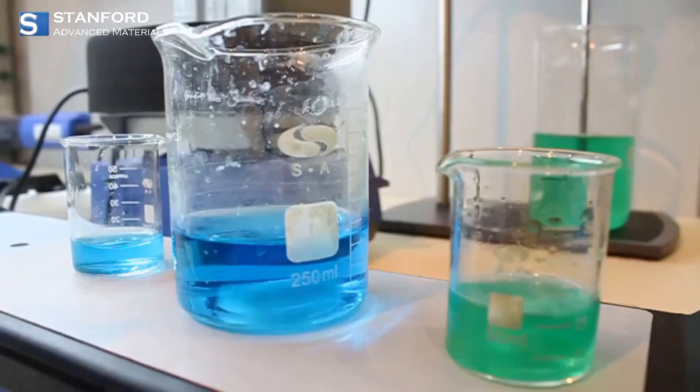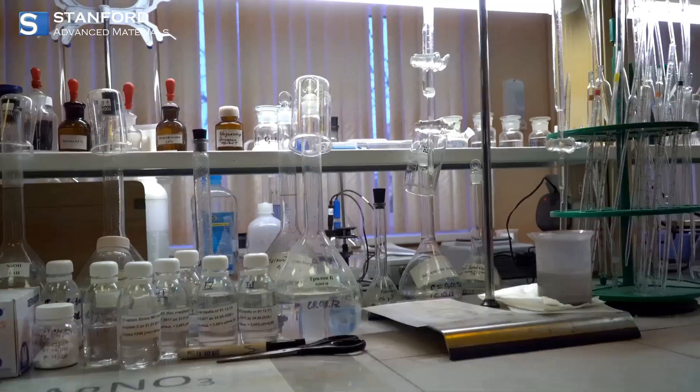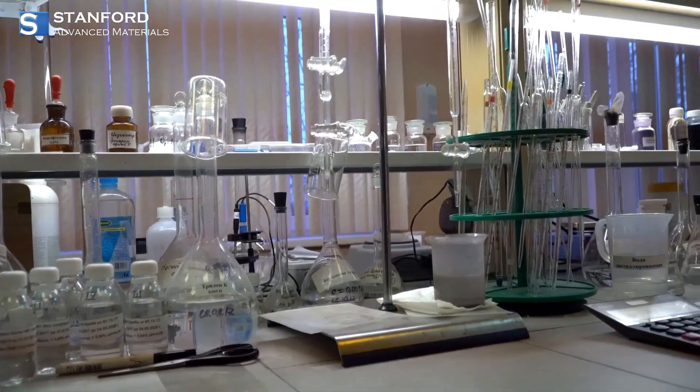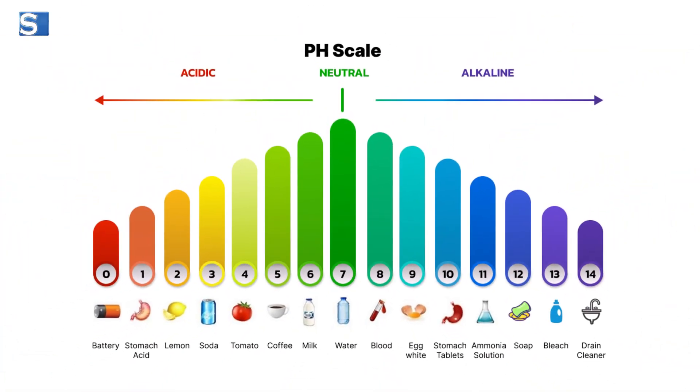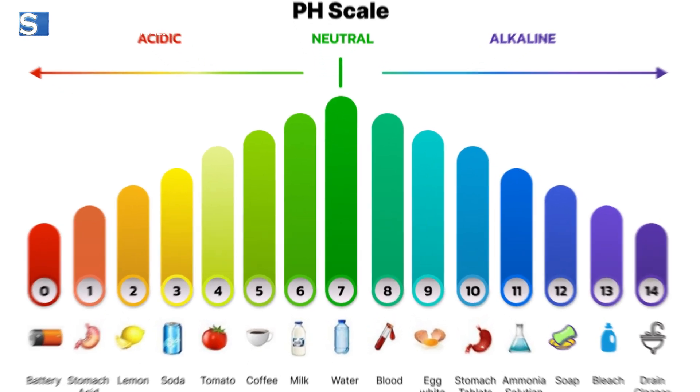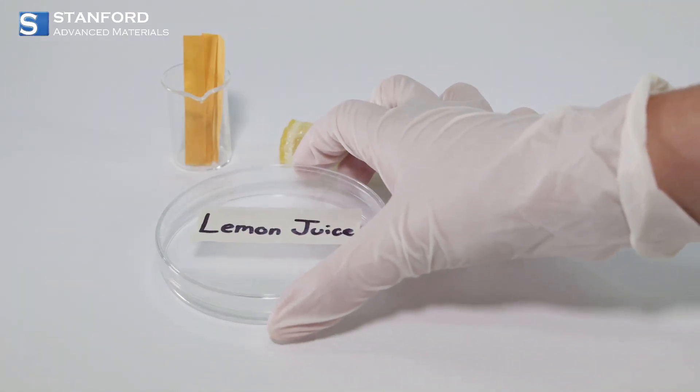It's a measure of how acidic or basic a solution is based on the concentration of hydrogen ions. The pH scale runs from 0 to 14: 0 to 6 is acidic, 7 is neutral, and 8 to 14 is basic or alkaline.